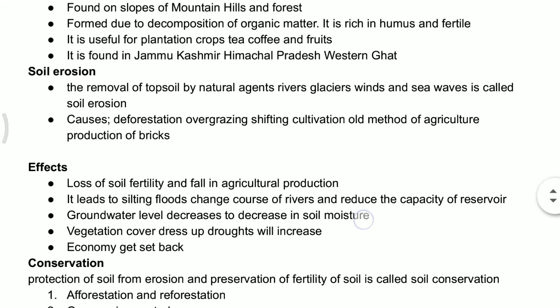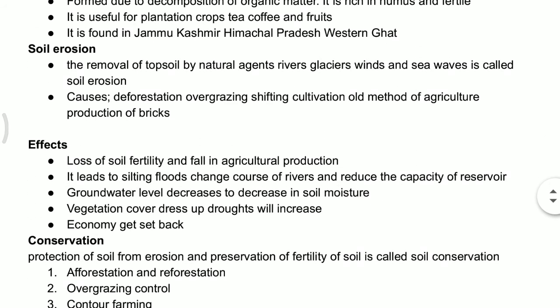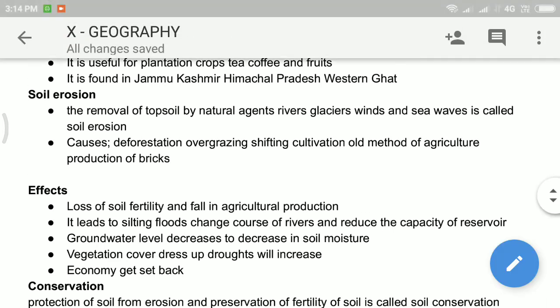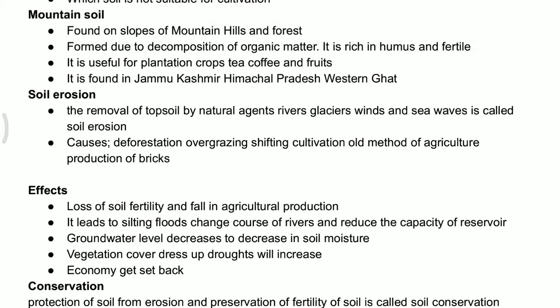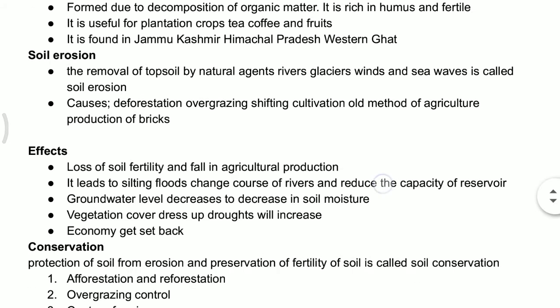These are the types of soil we discussed. For each type of soil we have to concentrate on how that soil is created, which crops are preferred, what are the characteristics, and what is the composition of that soil. Now let's move on to soil erosion. Soil erosion is the removal of topsoil by natural agents — rivers, glaciers, winds, and sea waves.